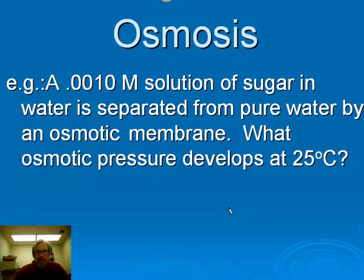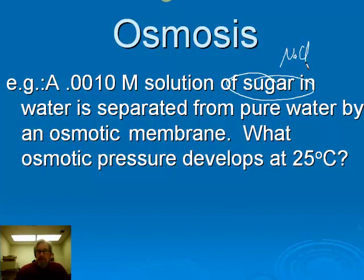The problem says we have a 0.0010 molar solution of sugar in water, separated from pure water by an osmotic membrane. What osmotic pressure develops at 25 degrees C? Sugar is used here to keep it simple. If this were sodium chloride, we'd have to account for the van't Hoff factor, because sodium chloride is an electrolyte and colligative properties depend on how many particles are present — so we'd have to double everything since there are twice as many particles.